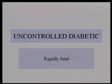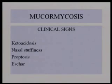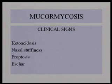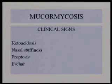If you get any uncontrolled diabetic coming into the emergency room, you should think of mucormycosis. There will be ketoacidosis, nasal stuffiness from physical blockage by fungal elements, proptosis where the eyeballs bulge out due to a mass growing behind them, and eschar with bleeding and scabs around the nose and mouth.